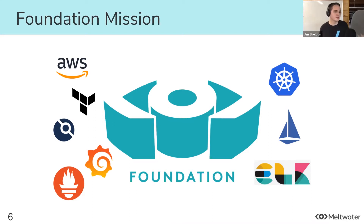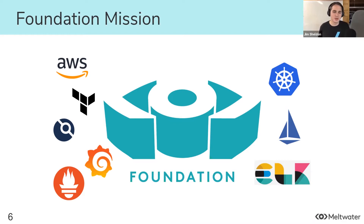Services offered include things around AWS and consolidated billing, best practices around Terraform, CI/CD, metrics, Prometheus and Grafana. The European team runs the Kubernetes cluster, responsible for service mesh with Istio, and runs an entire logging backend with Elasticsearch, Logstash, and Kibana.